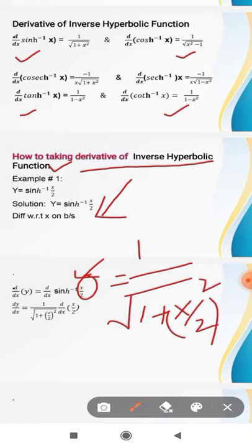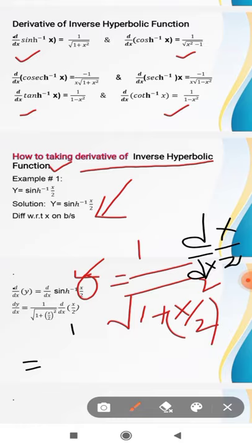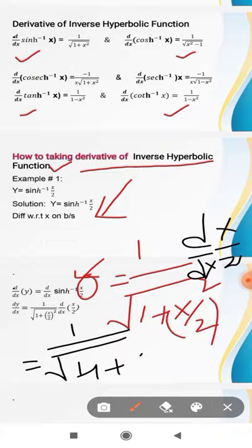After taking the square of x by 2, simply you need to take the derivative of x by 2. Then your answer will be 1 by under root 4 plus x square.